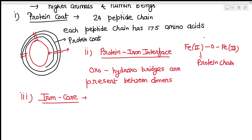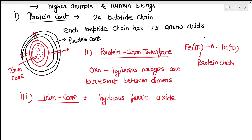The third part is the iron core. Inside the protein iron interface there is the iron core, which is filled up with iron. Only a small fraction of iron atoms is present as the protein iron interface, and the bulk of the iron is present as the iron core. In this iron core, iron is present in the form of hydrous ferric oxide, and various amounts of phosphates are also present.